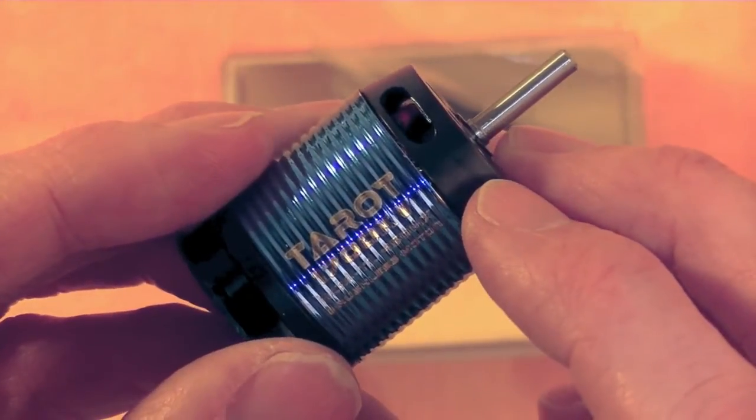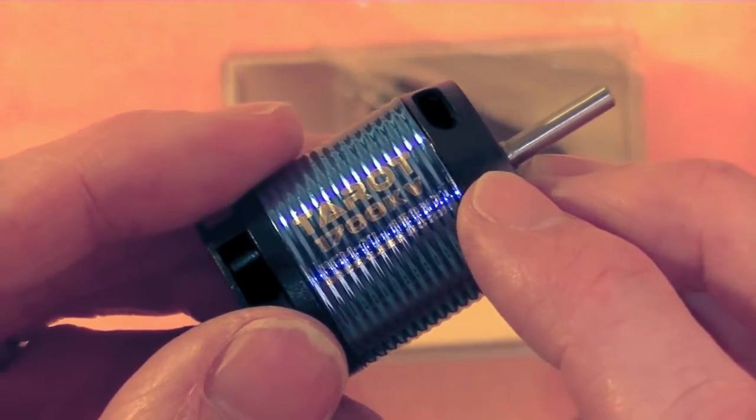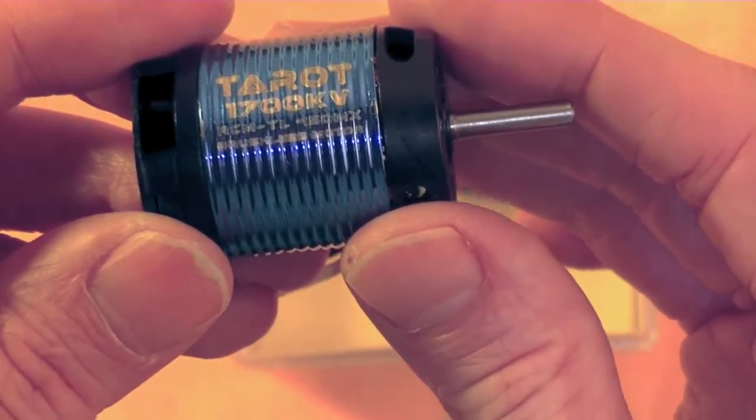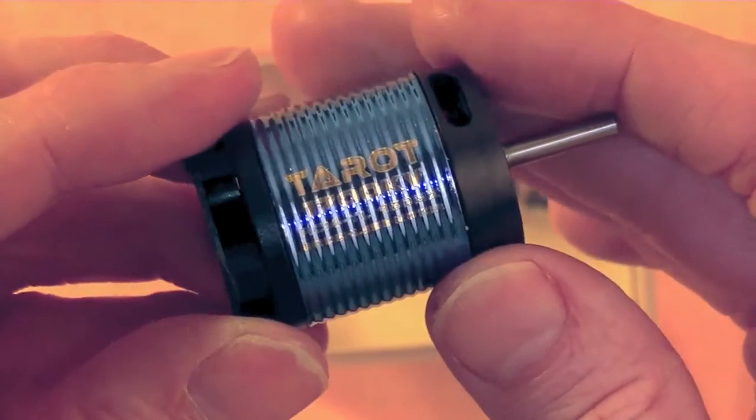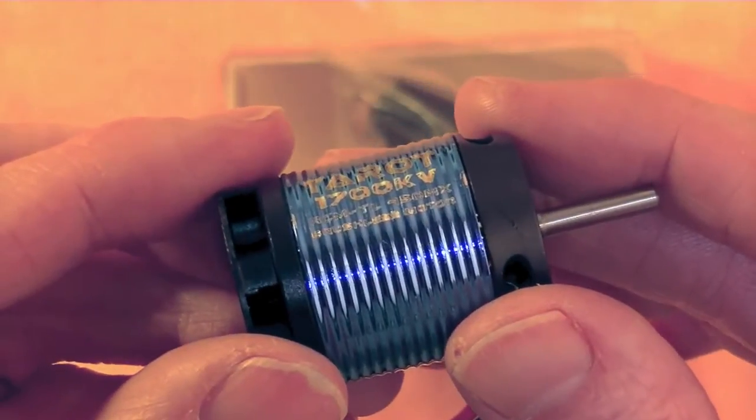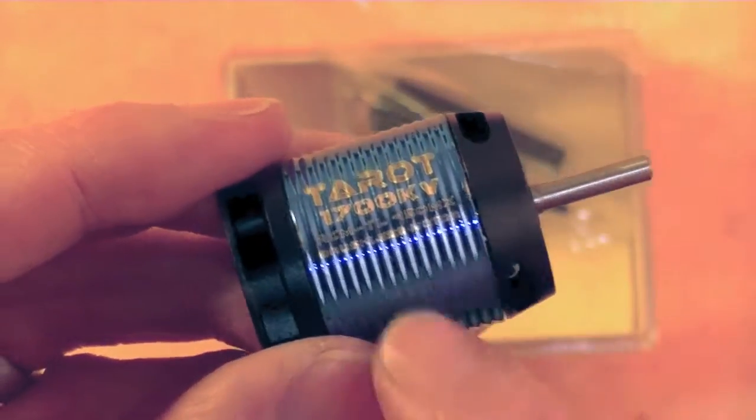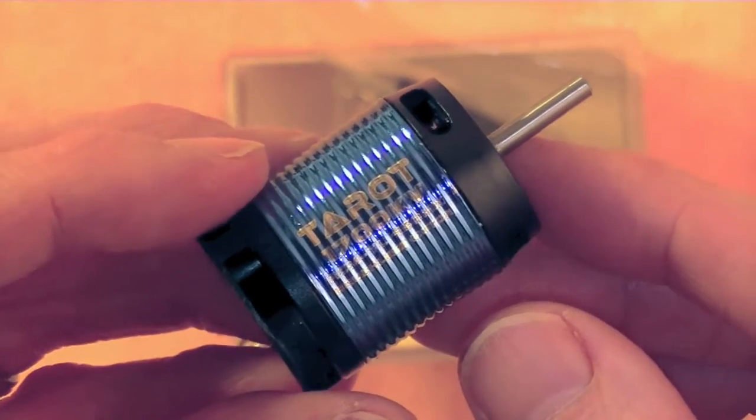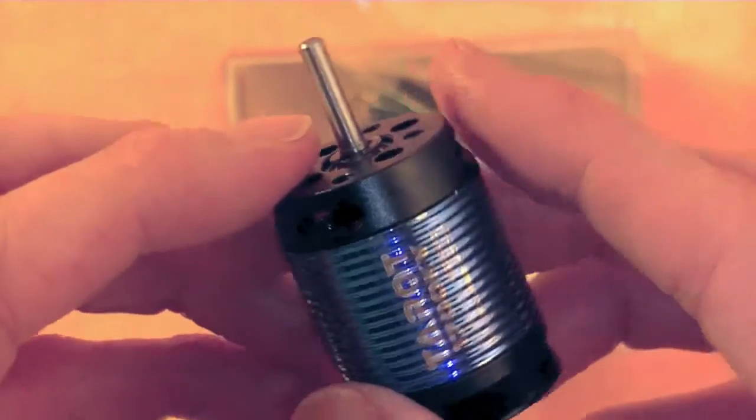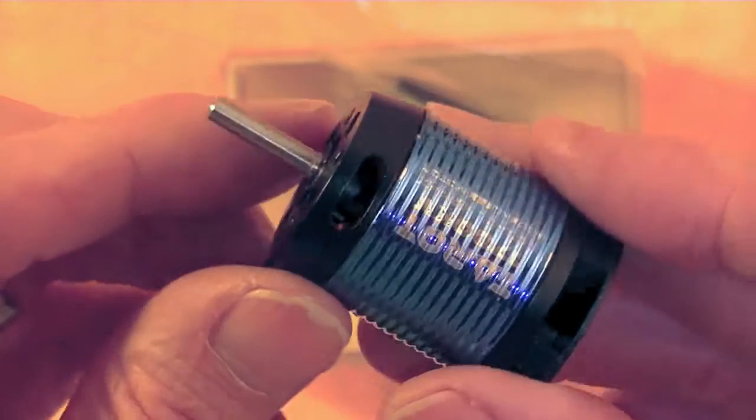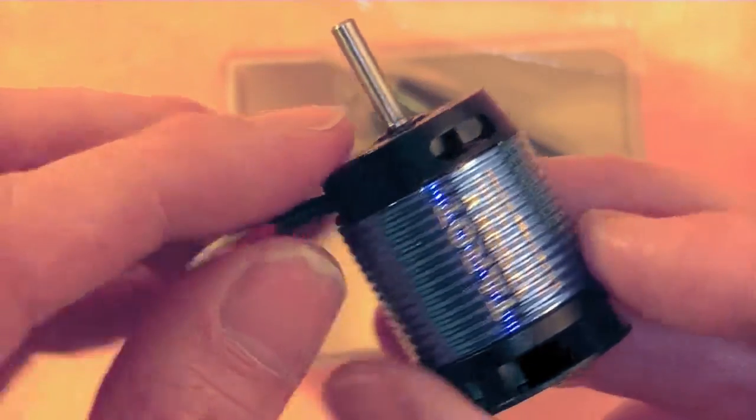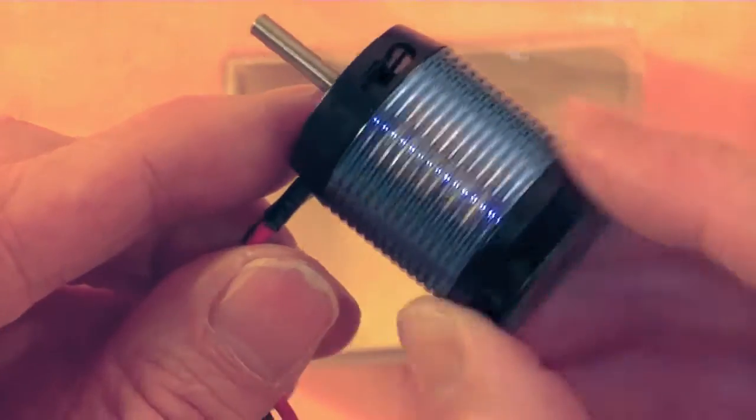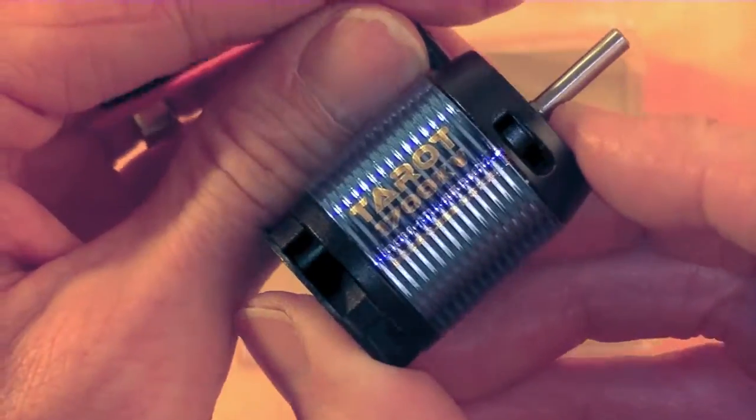The motor I had before in my heli was a 2000 KV, and I was using quite a bit of throttle curve to keep the head speed where I wanted it, so I thought I would try a little bit lower KV motor. Actually if you've been following my build thread on Helifreak, you'll know that my last crash, the motor shaft on my last motor actually broke off, so I had to get a new motor. This is what I'm going with, Taro 1700 KV.